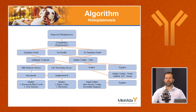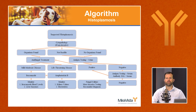Treatment won't be covered in detail today — that will be addressed in a later segment. Briefly, the treatment of choice for mild to moderate disease managed on an outpatient basis is itraconazole, and for life-threatening disease, the treatment of choice is amphotericin B.